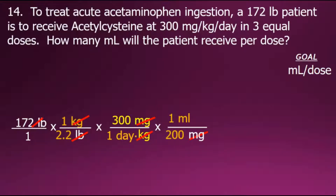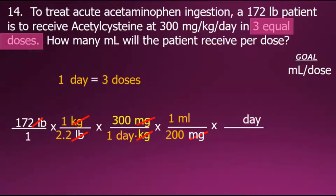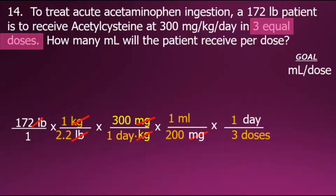One step is left — we need to eliminate 'day.' We'll place 'day' in our next conversion fraction. The problem states that this medication should be administered in three equal doses, meaning in a day's time we will administer three doses. Placing these equivalent values in our last conversion fraction gives it a value of one, allowing us to cancel out the common factor of 'day' in the numerator and denominator, leaving us with units of milliliters per dose, which was our goal.